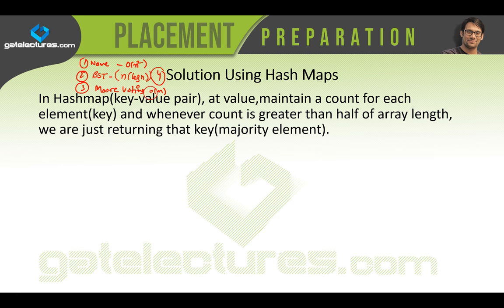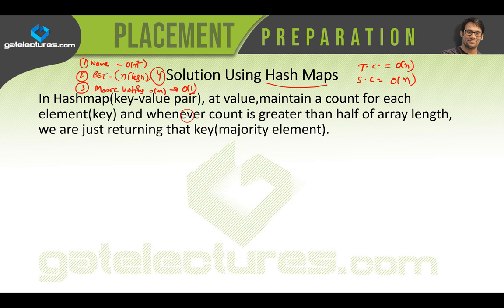This fourth solution uses hash maps, which also has O(n) time complexity. At the same time, it has a space complexity of O(n) as well. In Moore's voting algorithm, time complexity was O(n) but space complexity was O(1). Still, it is very interesting to study hash maps to solve exactly the same problem.